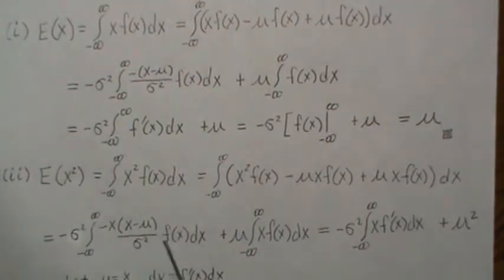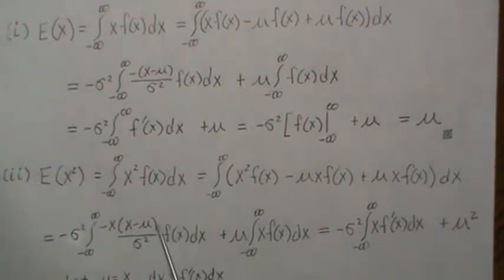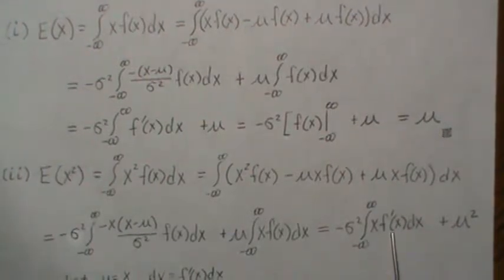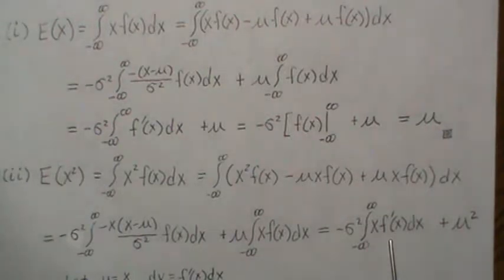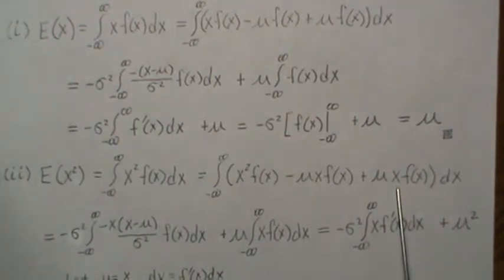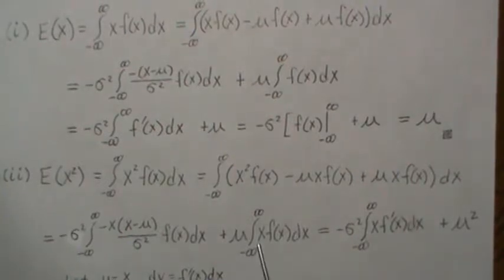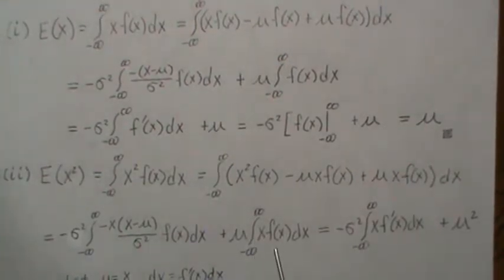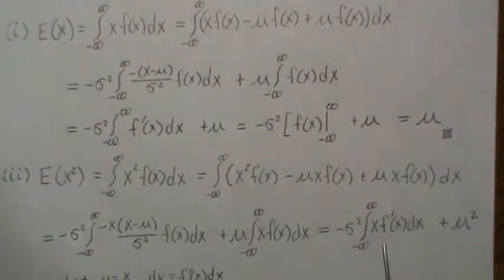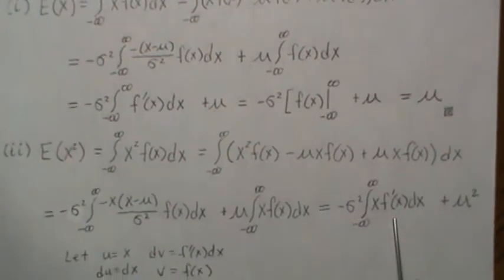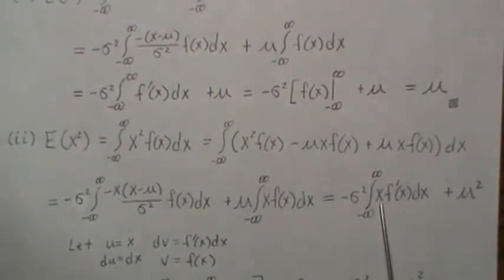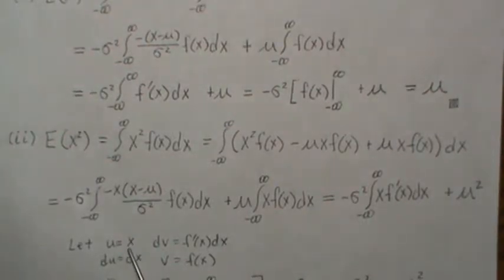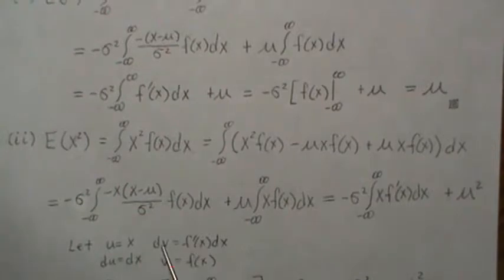The reason we do that is this piece here is the first derivative — the negative of it. So here we get that term, but then this is just the mean so we know it's μ, giving us μ². Now we have to evaluate this piece using integration by parts. Let u equal x and dv equal this part, so the derivative of x is just dx, and v = f(x).